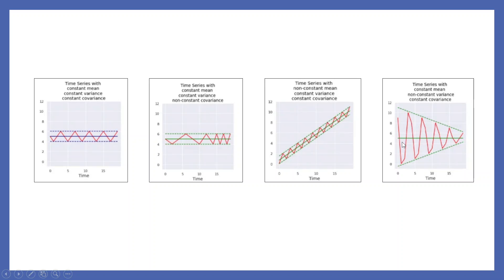The fourth one — green line shows mean is constant. See the distance between the green dotted lines — it is decreasing, which means this is an example of non-constant variance. See the distance of the red lines — this is constant, so constant covariance. The first plot is an example of a stationary time series. The second, third, and fourth are examples of non-stationary time series.